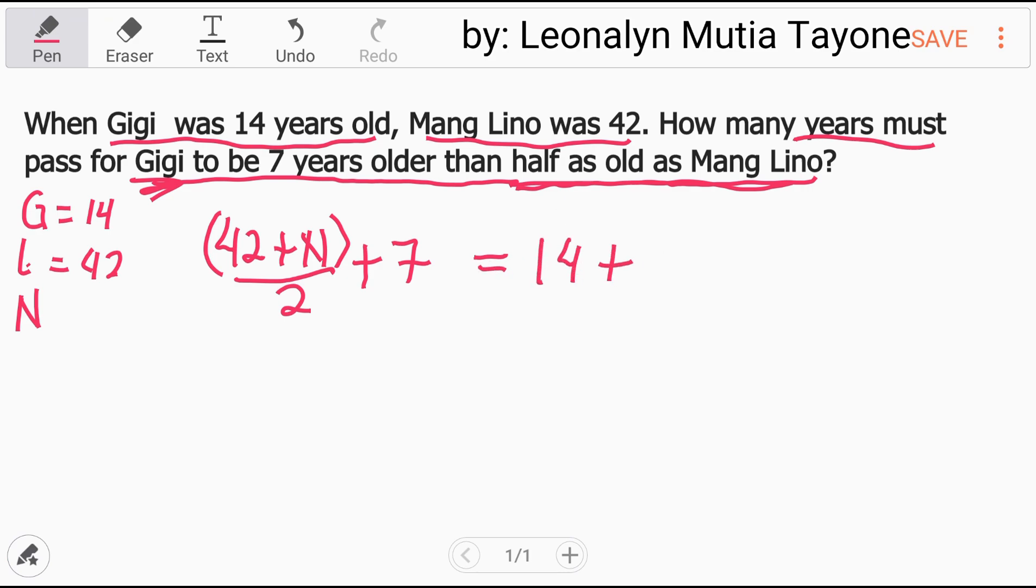We'll equate this - Gigi is 14 years old plus N years. This N is the constant you add to both their ages, Gigi and Lino. After those years, Gigi's age will be this: half of 42 plus N, divided by 2, plus 7. That equals 14 plus N.